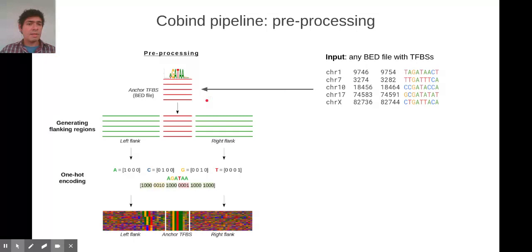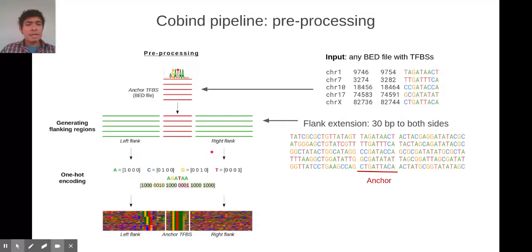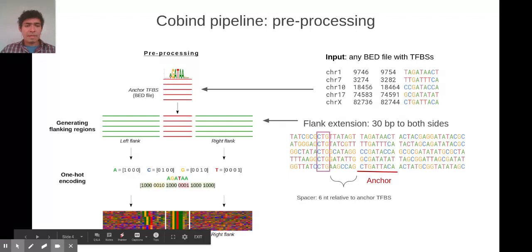This set of binding sites we will refer to as the anchor or reference, and for each of these binding sites we extend the sequences to obtain the flanks, left and right. These flanks are converted to a one-hot encoding representation, so we can cluster these representations and obtain patterns. Then we can measure the distance of this pattern relative to the anchor.